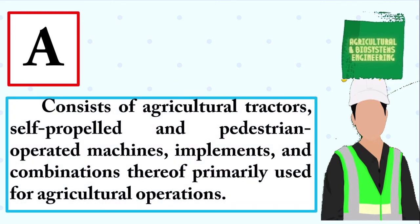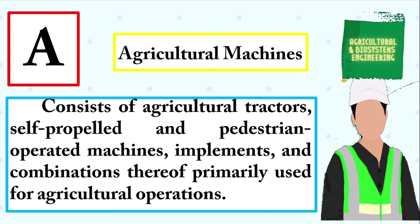Consists of agricultural tractors, self-propelled and pedestrian-operated machines, implements, and combinations thereof primarily used for agricultural operations. The answer is: agricultural machines.